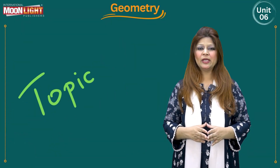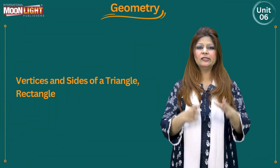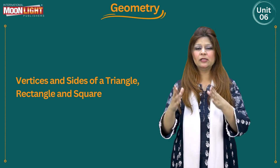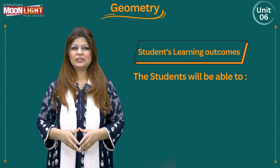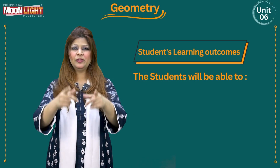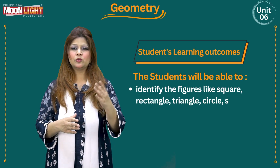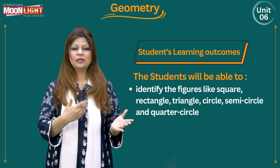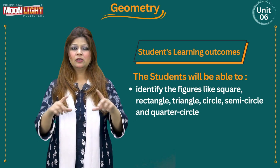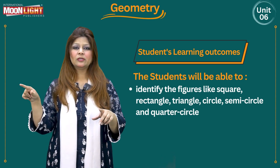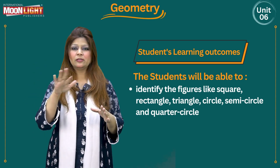Today my topic is vertices and sides of a triangle, rectangle and square. By the end of this lesson you will be able to identify the figures like square, rectangle, triangle, circle, semicircle and quarter circle.